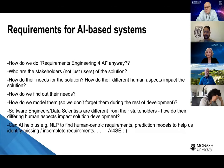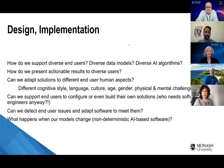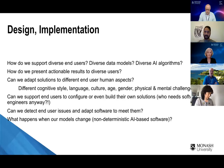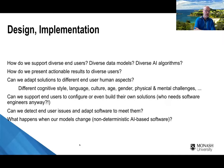So without further ado — design. How do we support these diverse end users, diverse data models, and algorithms? How do we present actionable results to users? How do we adapt the solutions — we've got all these different cognitive styles, language, culture, age, and so on. How do we come up with a design and implementation that can change while it's in use at runtime? Can we let people change it themselves? I mentioned adaptable interfaces where you might reconfigure things, but can they do more sophisticated changing? Who needs software engineers and data scientists anyway — just give them tools so they can do it themselves. How do we detect issues and adapt the software? Semi-automatically, with a human in the loop, is where I think the interesting ground is.